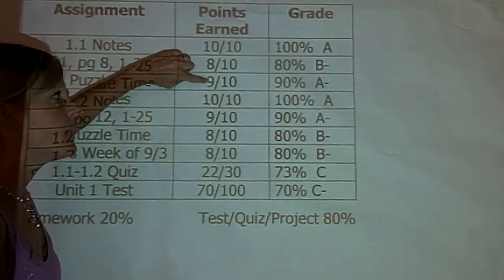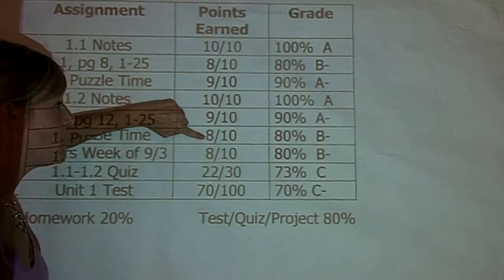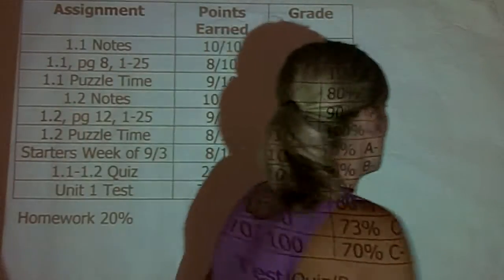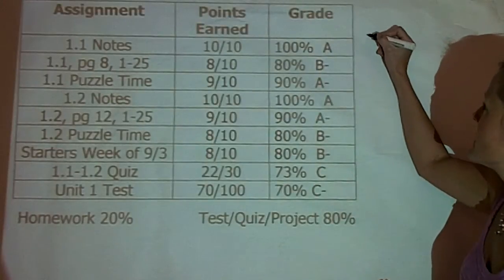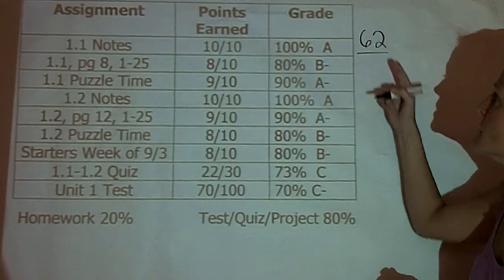So, I would take 10 plus 8 plus 9 plus 10 plus 9 plus 8 plus 8. And when you do that, you get 62.